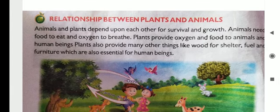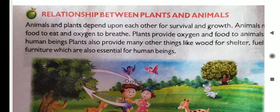Animals and plants depend upon each other for survival and growth. Jo animal or plants hote hain, woh depend karte hain ek doosare ke upar, survival karne ke liye aur growth karne ke liye — matlab zinda rehne ke liye aur badhte rehne ke liye. Animals need food to eat and oxygen to breathe. Plants provide oxygen and food to animals.